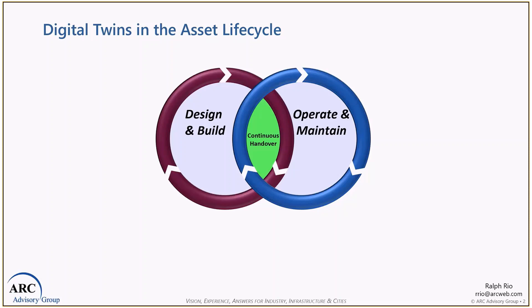Then there is a handover to the people who are going to actually operate and maintain that asset. Their metrics are more around performance of the asset — throughput, on-time shipments, quality, et cetera. On the operate and maintain side, there is a set of business processes specific to that domain, usually managed by people with deep experience in that area.